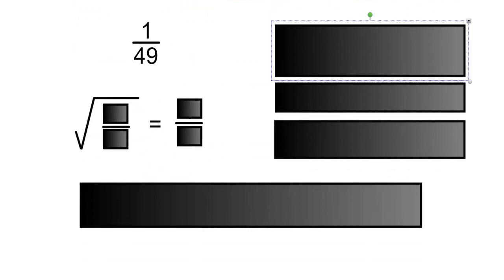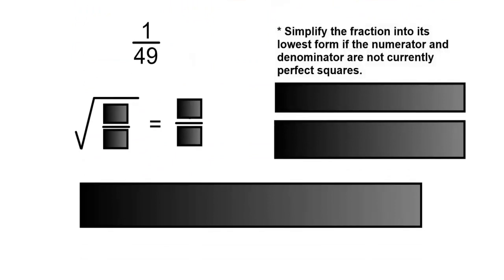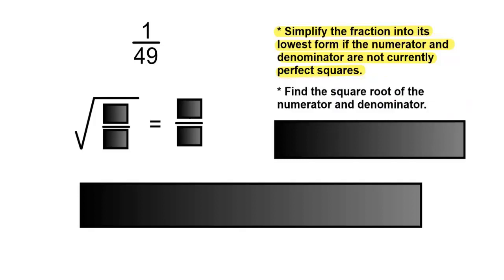1 over 49. Simplify the fraction into its lowest form if the numerator and denominator are not currently perfect squares. The number 1 is a perfect square and it's also in its lowest form, so this cannot be reduced. Find the square root of the numerator and denominator. The square root of 1 over 49: the square root of 1 is 1, and the square root of 49 is 7.